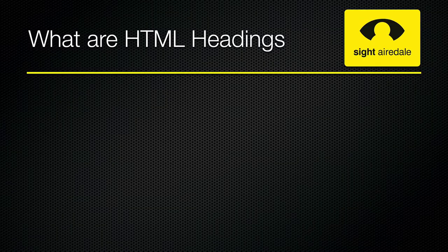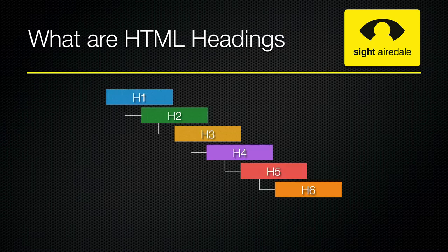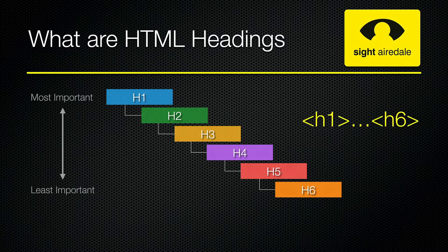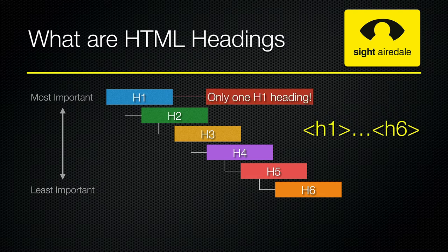So what are HTML headings? HTML has six heading levels, each labelled H1 to H6, with H1 being the most important heading and H6 being the least important. The H1 heading is only ever used once per page and represents the main heading of the page. The remaining levels can be used as many times as needed, but must be in order.